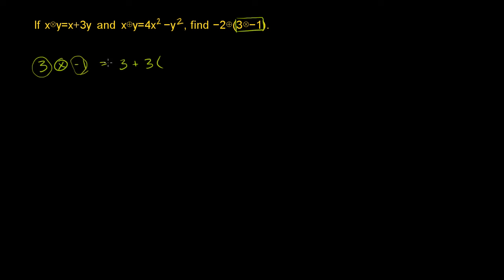That's negative 1, so this is 3 plus negative 3, which equals 0. This whole part right over here equals 0.